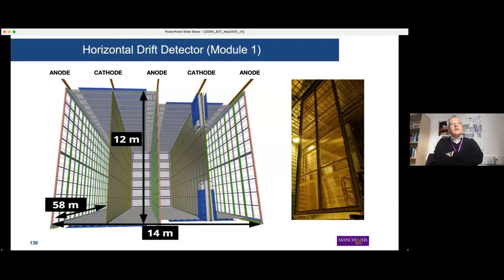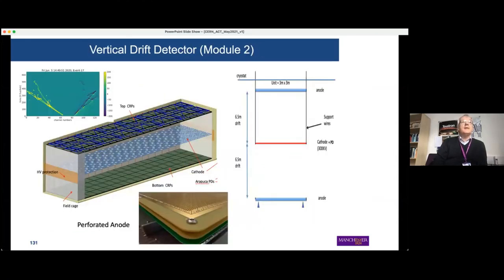One module's wire plane assembly is 6×2.5 meters and is mostly being built in the UK at Daresbury Lab near Manchester. The second module will use a different technology called vertical drift: here the drift happens vertically rather than horizontally, with the cathode in the center and anodes on top and bottom. Instead of wires, perforated anodes are used — easier to produce than wire planes — with similar efficiency and charge readout performance. This is still in the R&D phase, with work also happening at CERN.